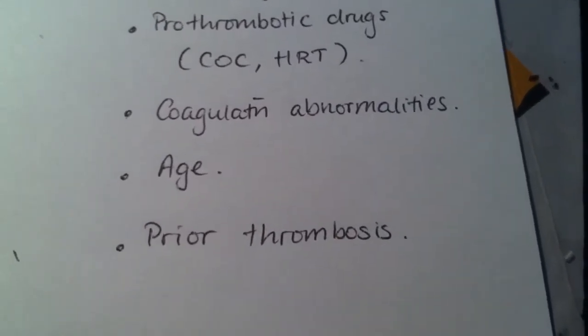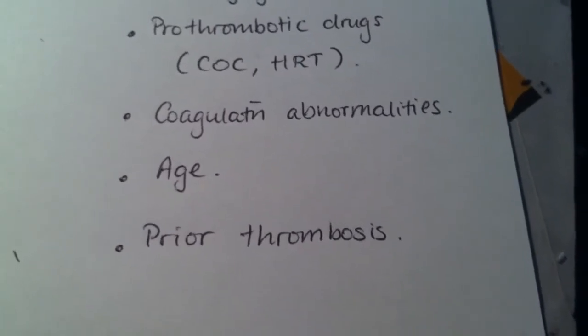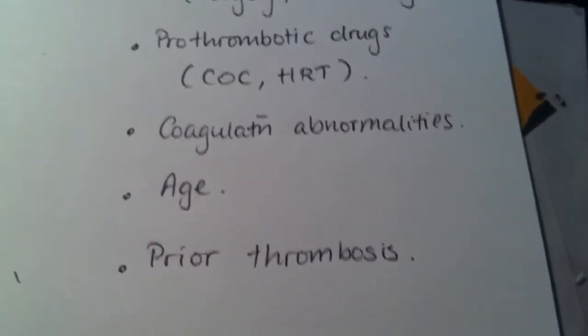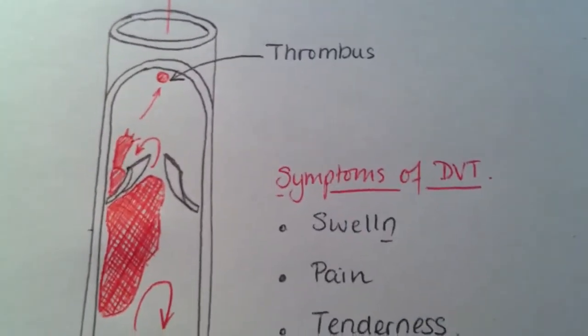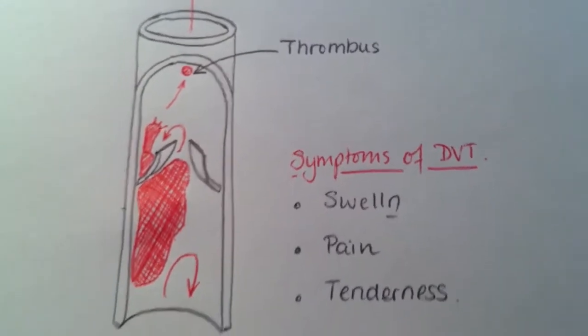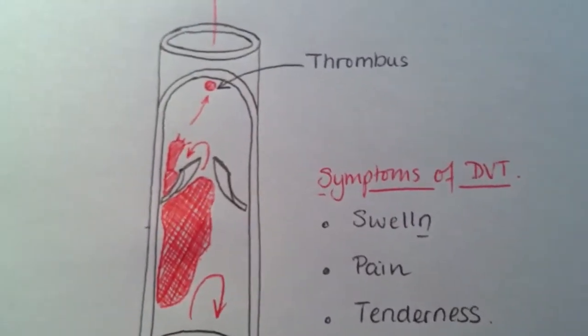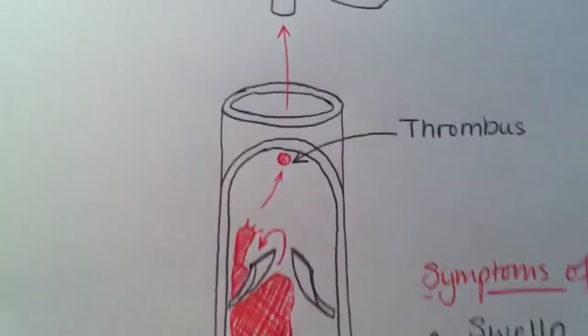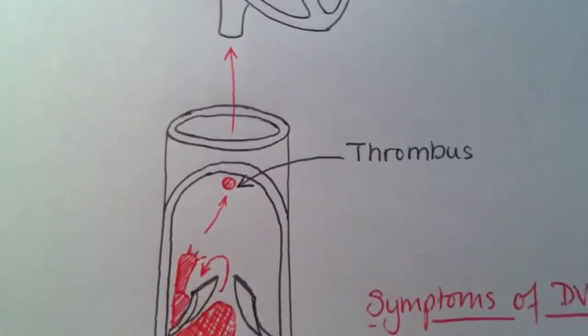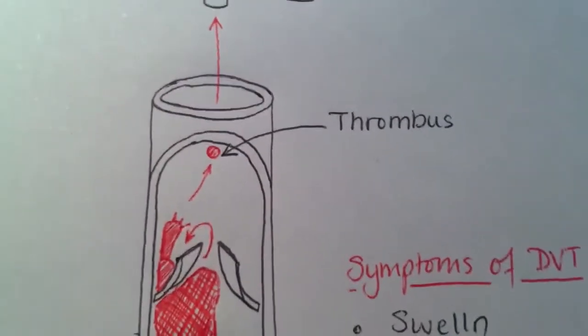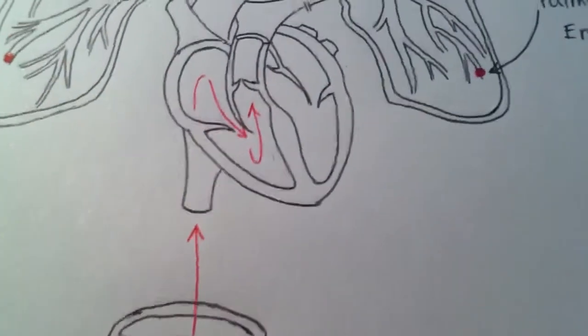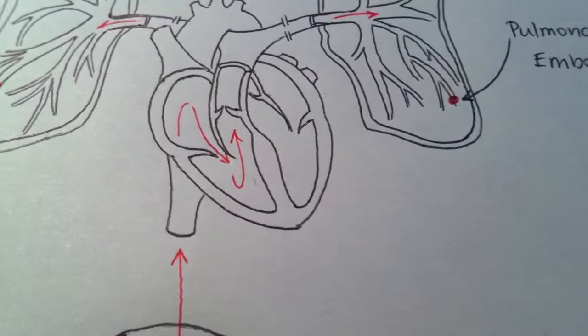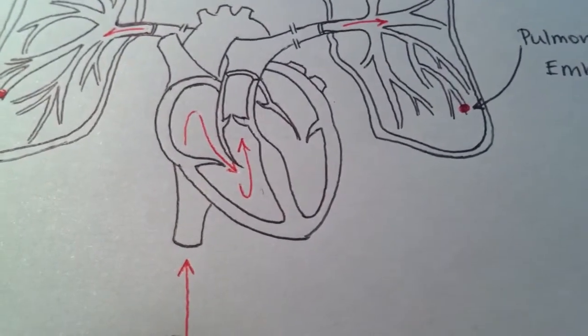The reason why DVT does not cause stroke is because you see right here you have a little thrombosis broken off from the main clot and it's moving up the veins into the heart. So this is on the right side, it goes into the right atrium which then gets pumped down to the right ventricle.